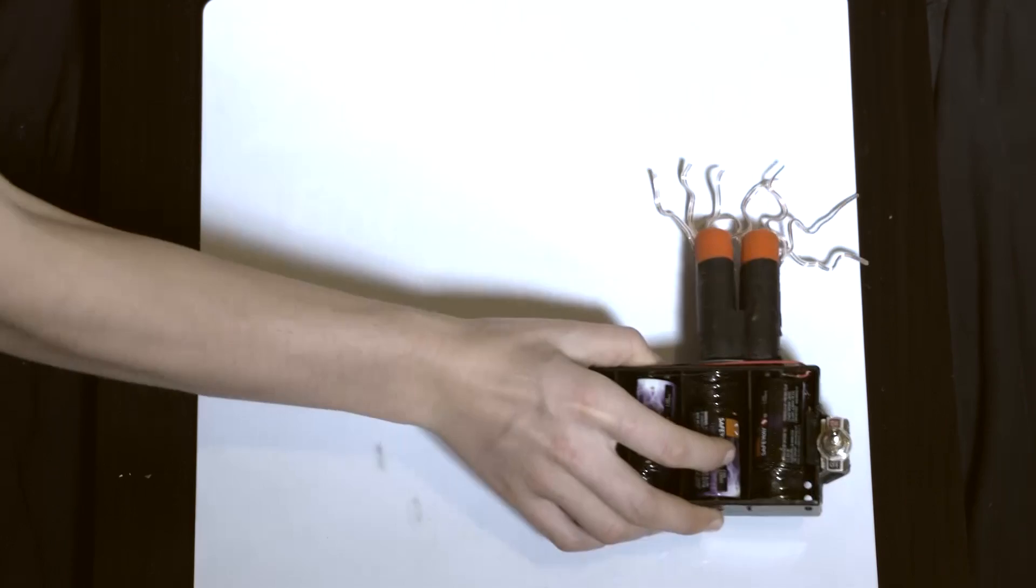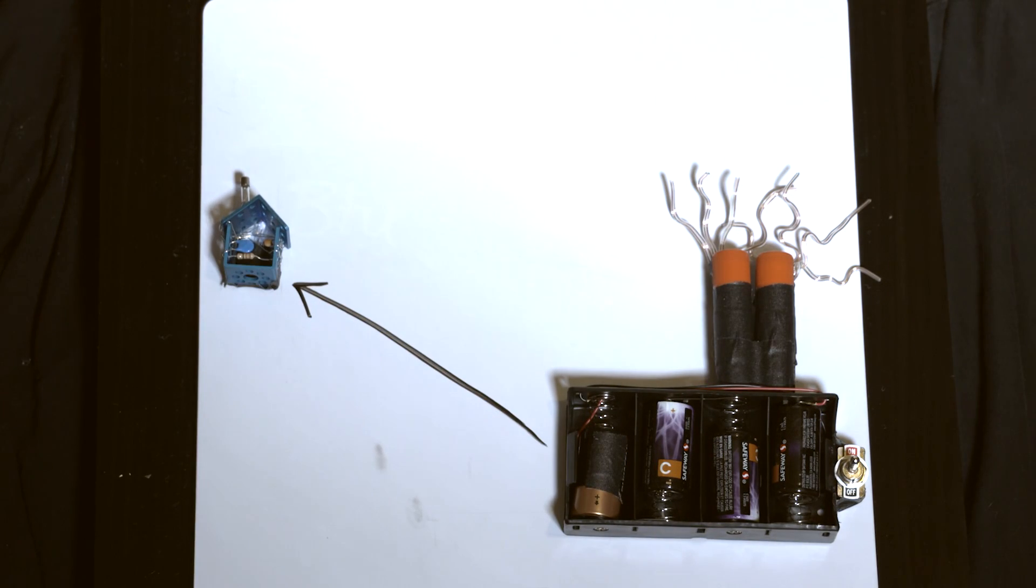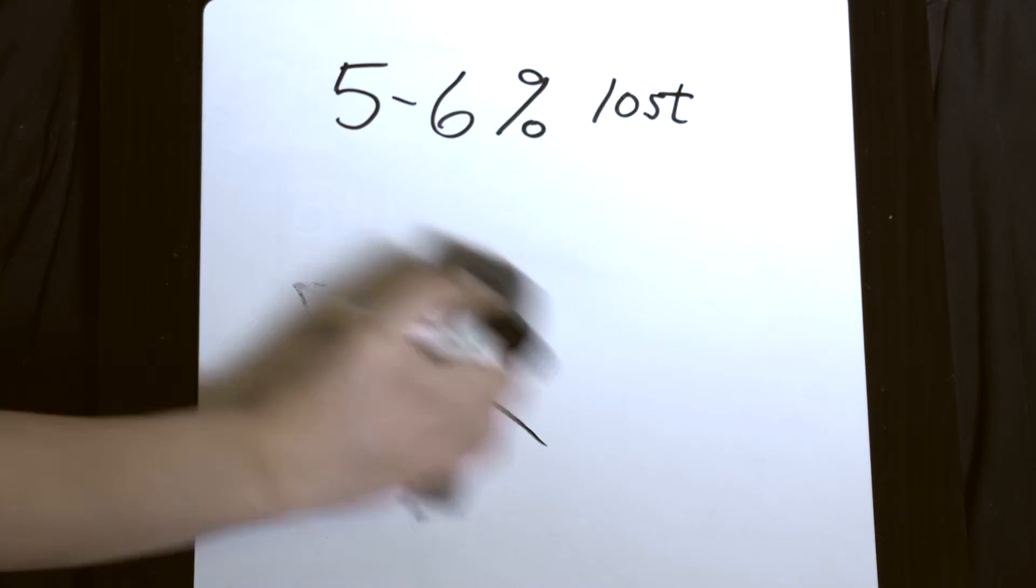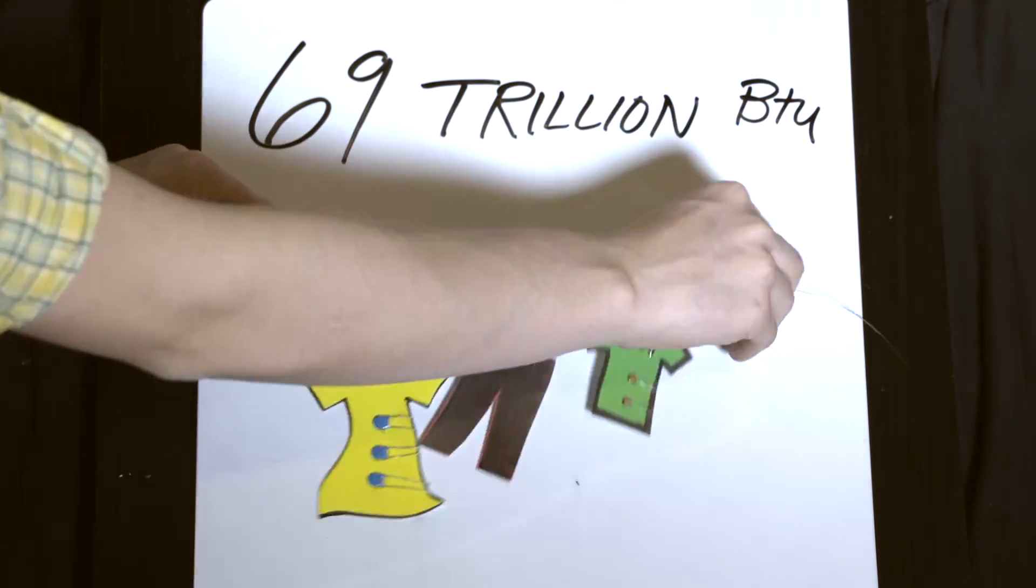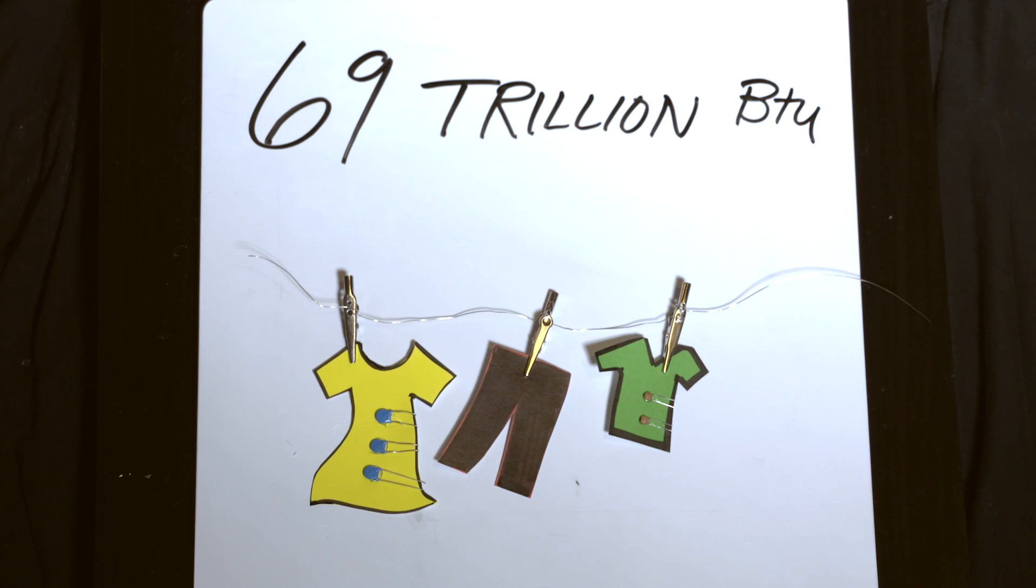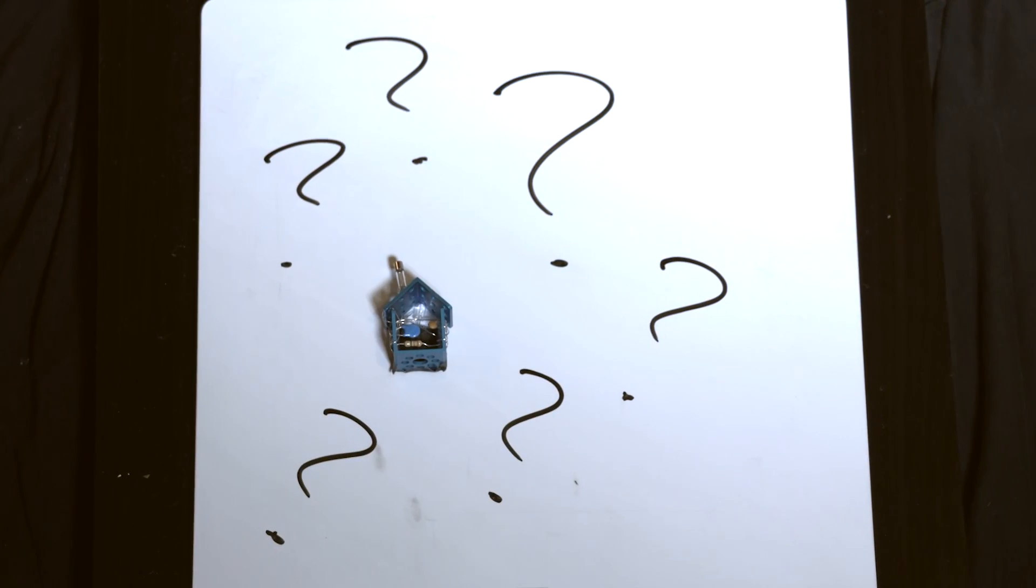When we move electricity from a plant to your home, you lose another 5 to 6%. That's 69 trillion BTU. Or roughly the same amount of energy Americans use drying our clothes every year. And inside your home, it's a mystery.